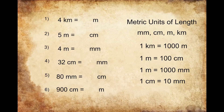In question number one, we're being asked to convert four kilometers into meters. Looking at our info on the right-hand side, we can see that each kilometer has 1,000 meters in it. So if I have four kilometers, I'm going to have four groups of 1,000 meters. Whenever I'm looking to convert kilometers into meters, I can just multiply the value by 1,000. So four times 1,000 gives us 4,000. Four kilometers converts to 4,000 meters.